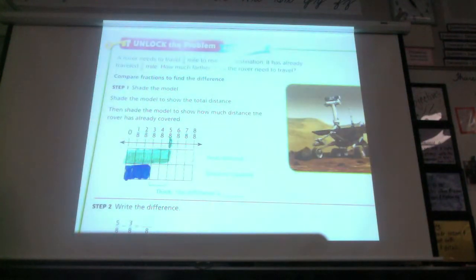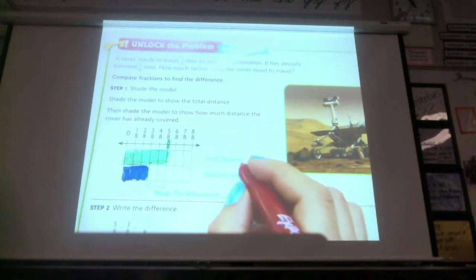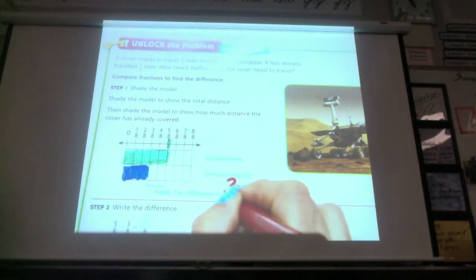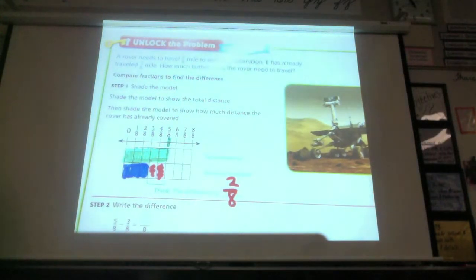All right, what is the difference on how much it still has to travel? Two. Two parts, right, out of how many parts total? Two out of eight. And we can see that right here. It's this one and this one that it still has to travel.